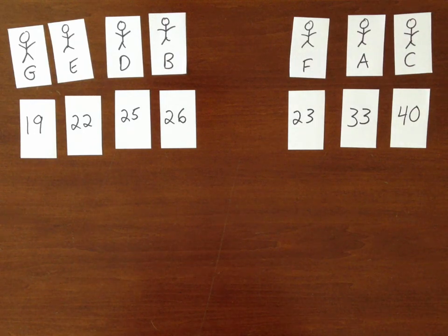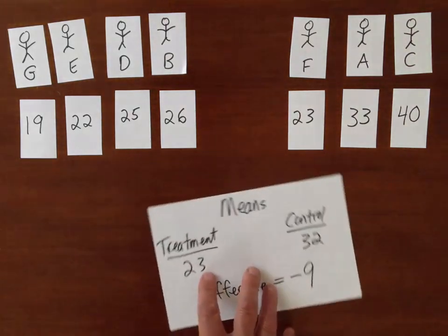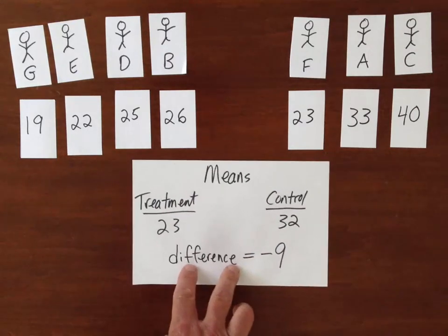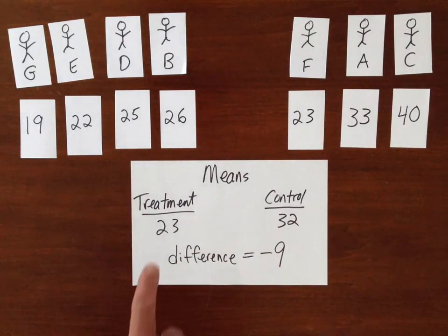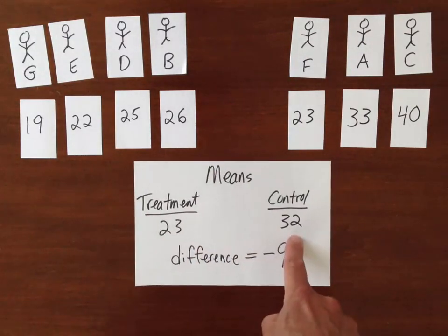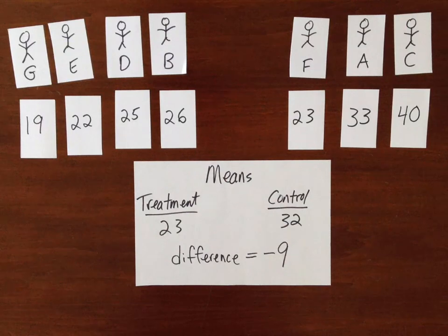We go ahead and do a calculation, and we find that the treatment condition took, on average, less time for the people to recover from the operation: 23 days as compared to 32 days for the control. If we take treatment minus the control, we have a difference of negative nine days. Now the question is, is this difference a significant difference or is it just due to chance?